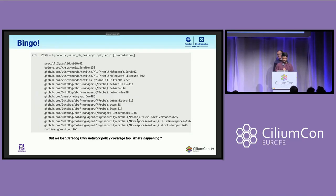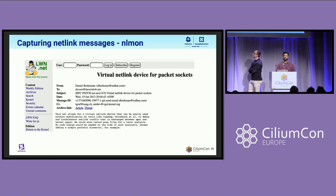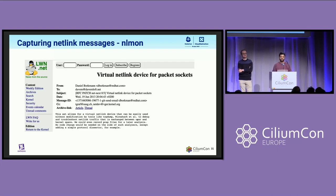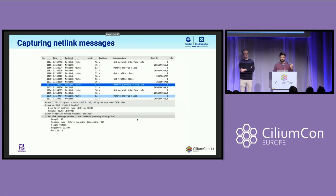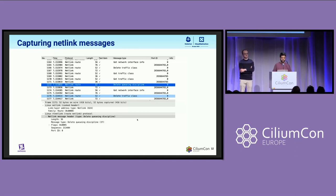At this point we also wanted to understand what other Netlink messages were being sent, because the TC binary does not use the Netlink library directly, but Cloud Workload Security's Datadog Agent was using the Netlink library to interact with the kernel. We wanted to capture all the Netlink messages being sent to the kernel. We found a kernel module called NLmon that allows monitoring all Netlink messages — we built the module, loaded it, and ran TCP dump on the virtual interface to get all the Netlink messages. What we realized is that the protocol parsing these Netlink messages did not have all the information we wanted, so we wrote a custom one to capture all these messages.